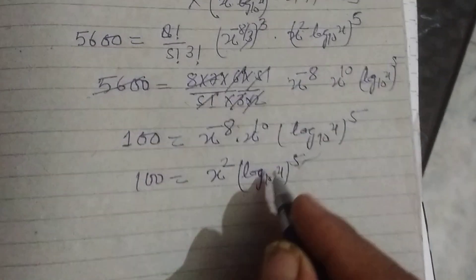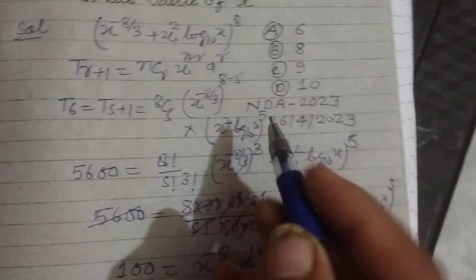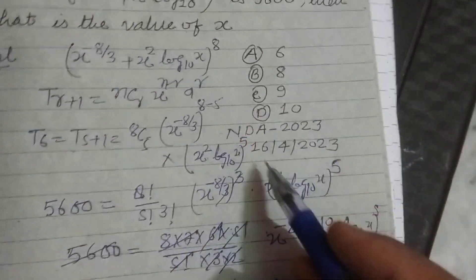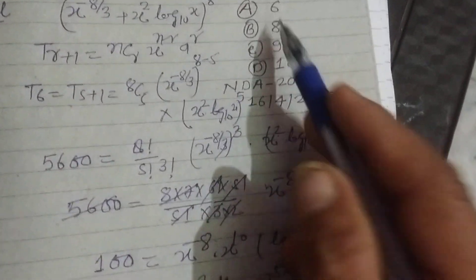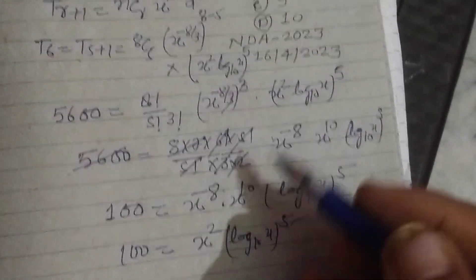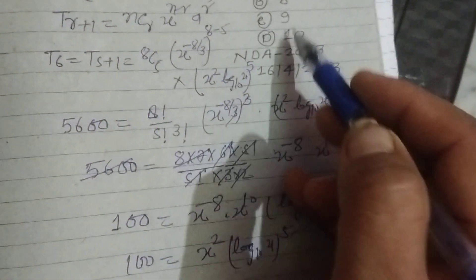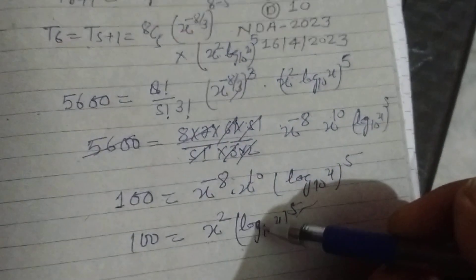Now, this is not possible to solve directly. So we consider the given options. If we put 6 here, it cannot be obtained. Put 8, 9, 10, it cannot be obtained.